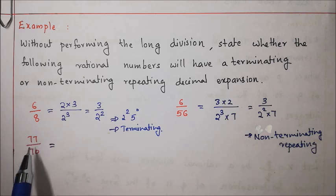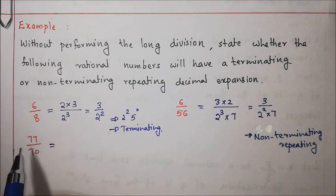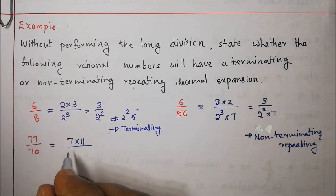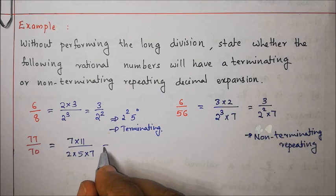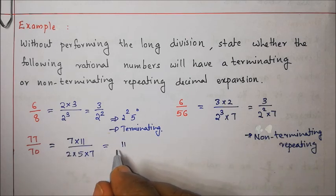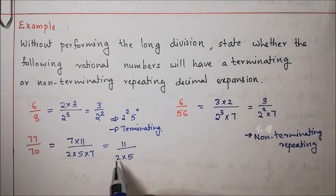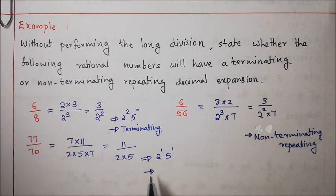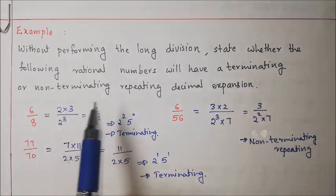Next is 77 by 70. Factors of 77 are 7 into 11. And 70 = 10 into 7 = 2 into 5 into 7. Cancelling the common factor 7, we get 11 by 2 into 5. The denominator can be written as 2 to the power 1 into 5 to the power 1, which is in the form of 2 to the power n into 5 to the power m. So this rational number will have a terminating decimal expansion.